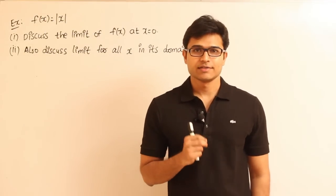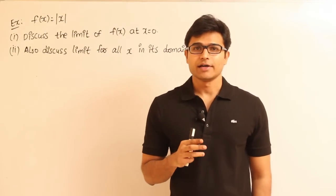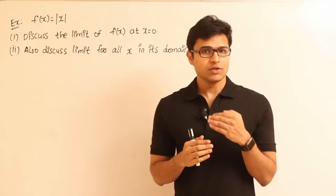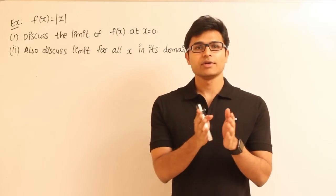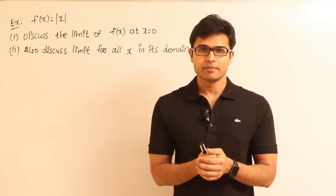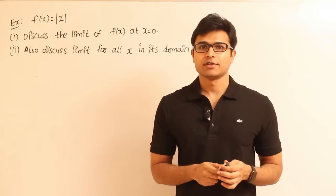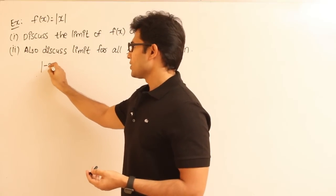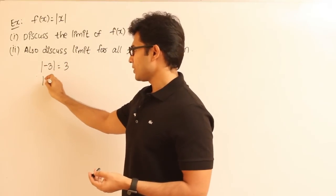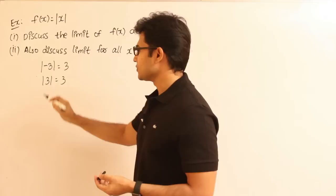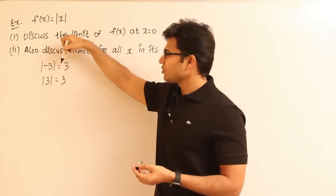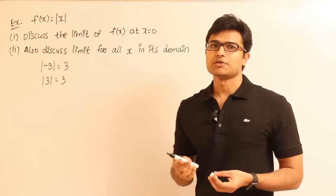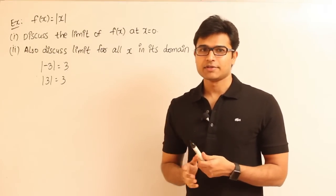Now let's see this function mod x. The importance — why this function is very interesting — is that it behaves in two ways. Whatever input we give it, the output is going to be a positive number, equal in magnitude to the input. For example, if I apply mod to minus 3, it is going to be plus 3. If I apply mod to plus 3, it is also plus 3. So whether you give a negative or positive value, the output is always going to be positive and equal to the input in magnitude.